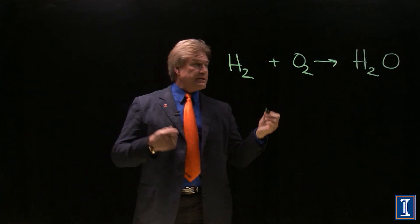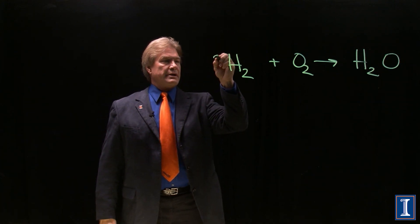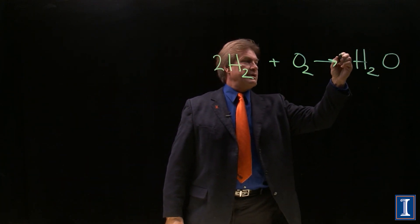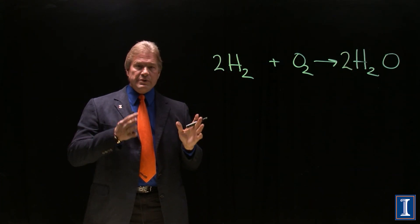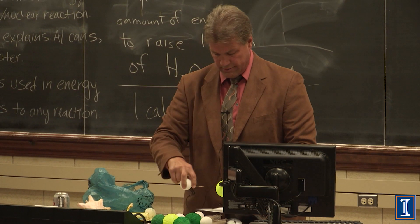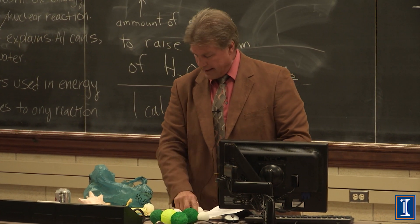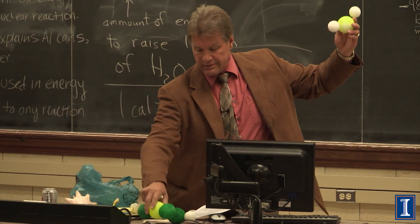We have to make this a balanced chemical reaction. So we actually need two molecules of this and we end up with two waters. This is a real classic example of taking chemical bonds and making them into something more stable.